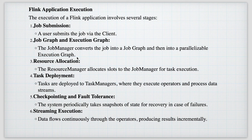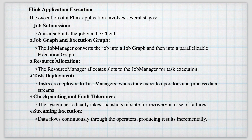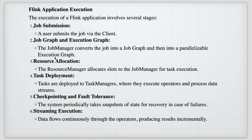Here's how a Flink application executes at a high level. First, the user submits the job via the client. The Job Manager converts the job into a job graph and then into a parallelized execution graph. The job graph is a high-level representation of the application operators, while the execution graph is more detailed — specifying exactly how tasks will execute on the Task Managers. Then resource allocation happens, task deployment follows, and execution begins, with checkpointing handled throughout.